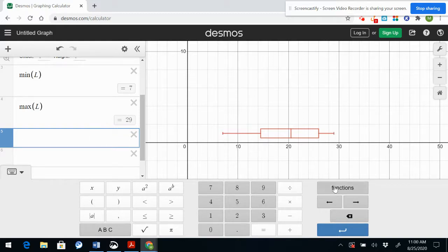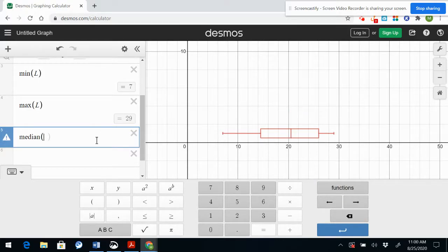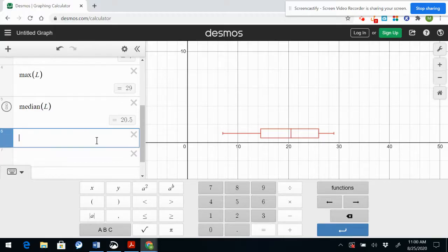Now I'd like to know the median of it or the second quartile shown here. I go to functions median and I'm going to type L for my data set, enter, and I get 20.5, again corresponding to the box and whisker plot.